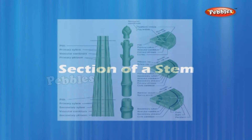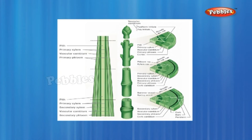Section of a Stem. Take a plant stem and with the help of your teacher, cut it into very thin slices or sections. Stain the slices with saffron. Place one neatly cut section on a slide and put a drop of glycerine. Cover with a cover slip and observe under a microscope. Observe the various types of cells and their arrangement and compare it with the figure. Observation: A. Cells are not similar in structure. B. Various types of cells are seen in the structure.